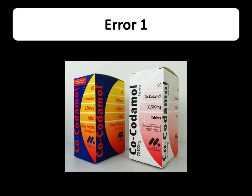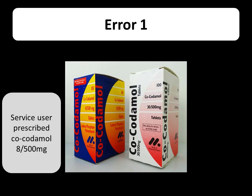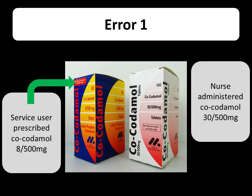That's a brief introduction to the medicines. Now I want to talk about the errors we see with them. Each of these errors has actually occurred in the trust, so these aren't just theoretical. In the first error, a service user was prescribed co-codamol. The lesson here is to be aware that co-codamol comes in two different strengths and to make sure you pick the correct one.